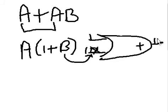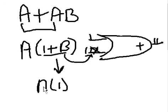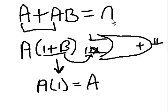1 or 1 is a 1. So anything OR'd with 1 will give me a 1. A times 1 equals itself, A. So A or AB equals A. What do you know!